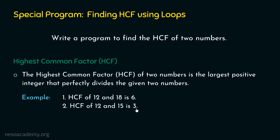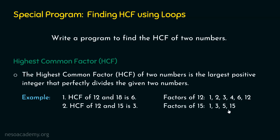Let's look at one more example. HCF of 12 and 15 is 3. For this, we need to look at the factors of both 12 and 15. Factors of 12 are 1, 2, 3, 4, 6, and 12. The factors of 15 are 1, 3, 5, and 15. We need to list all factors to find the common factors and then the highest common factor. Here, 1 and 3 are the only common factors, and out of these the maximum is 3. Therefore, HCF of 12 and 15 is 3.